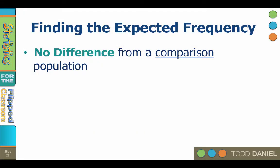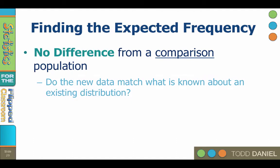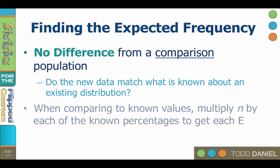The chi-square goodness of fit tests whether sample data are a good fit to a comparison population. Do the new data match what is known about an existing distribution? Because we will be comparing known values, we will multiply n by each of the known percentages to get each expected value.